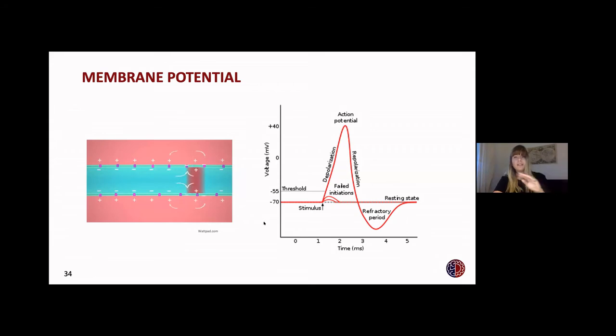The membrane potential in a resting state, this means when the neuron is not activated, for humans, is around minus 70 millivolts. And it's called resting potential. When the input signal from the other neurons is too low, then the neuron will not activate. What you can see here in the graph are unsuccessful neuron activations.